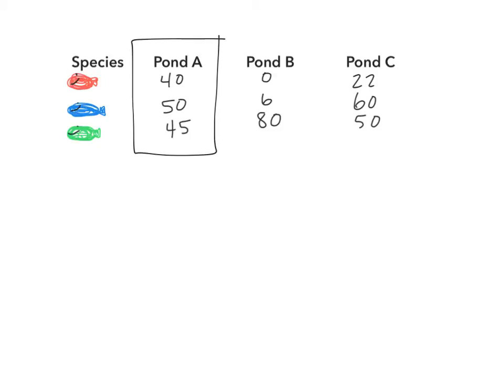So the first thing I need to do is add up all of the total individuals in that population for my big N value. So if I'm just looking at pond A and I add up all the individuals, I'm adding 40 plus 50 plus 45, which is a total of 135. So the big N value, which remember was all the species in the populations combined, so all the different species, all the numbers, all the individuals, is 135. We have a total of 135 fish in this pond.